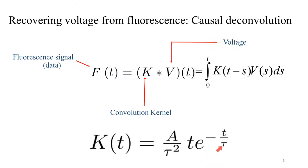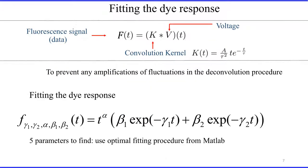There are two constants to be calibrated: the time constant tau and the amplitude A. Before solving this equation, there is an important step to prevent any amplification of fluctuations in the deconvolution procedure. Before performing the deconvolution, we fit the dye response — capital F of T — by a family of curves with five parameters: T to the power alpha, multiplied by a sum of two exponentials. This step is important to prevent the amplification of fluctuations.